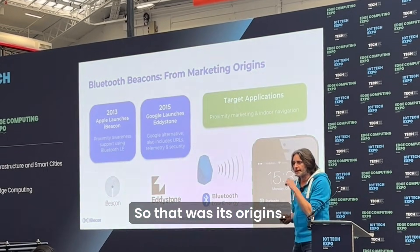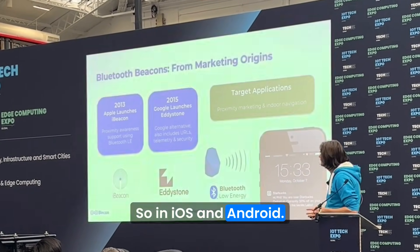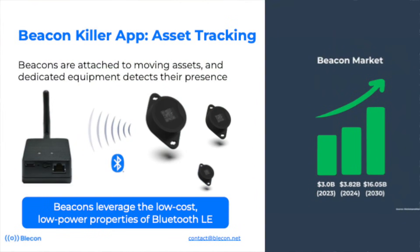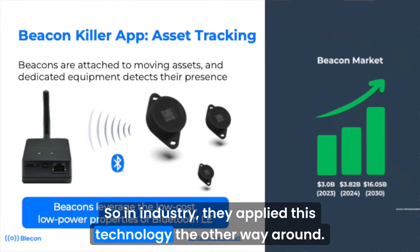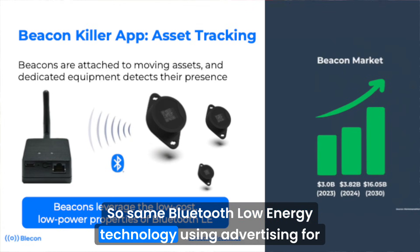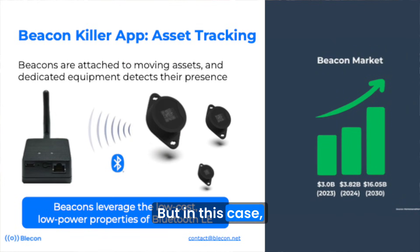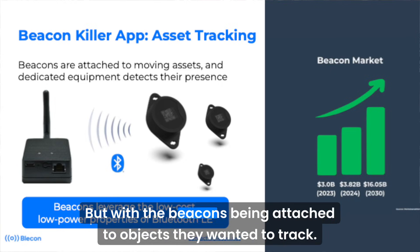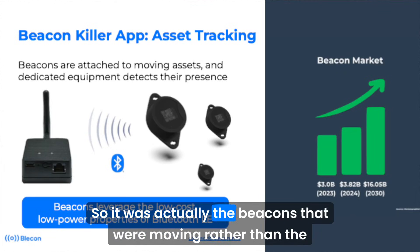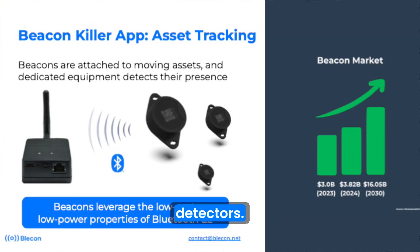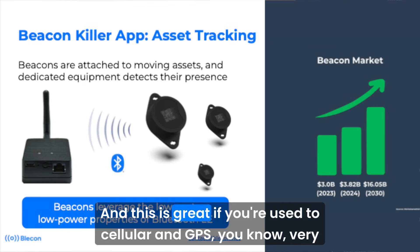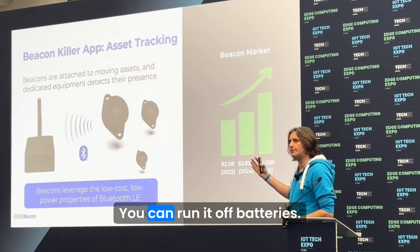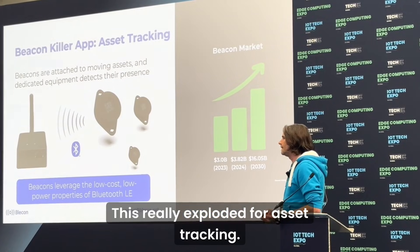So you have a fixed beacon in a location and people walking around with phones getting reactions because of this locationing system. That was its origins — that's what got it into all the operating systems, iOS and Android. But the killer app looked a bit different. In industry, they applied this technology the other way around: the things detecting the beacons were fixed infrastructure, but the beacons were attached to objects that needed to be tracked. So it's actually the beacons that were moving rather than the detectors.